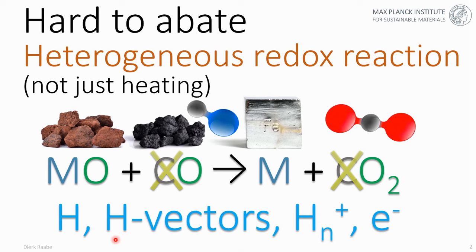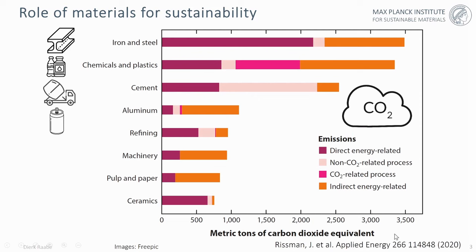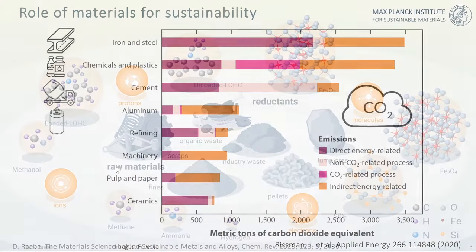Hydrogen alone is often quite expensive to cool down and transport. Hence, different types of hydrogen vectors are also explored — molecules that contain hydrogen in radical form, which is what we call a plasma when you expose the gas mixture to very high electrical excitation. You can also use electrons directly, like in electrolysis. These heterogeneous redox reactions and the high temperatures involved qualify iron and steel production as the biggest single industrial emitter of carbon dioxide, even before chemicals, plastics, cement, or aluminum.